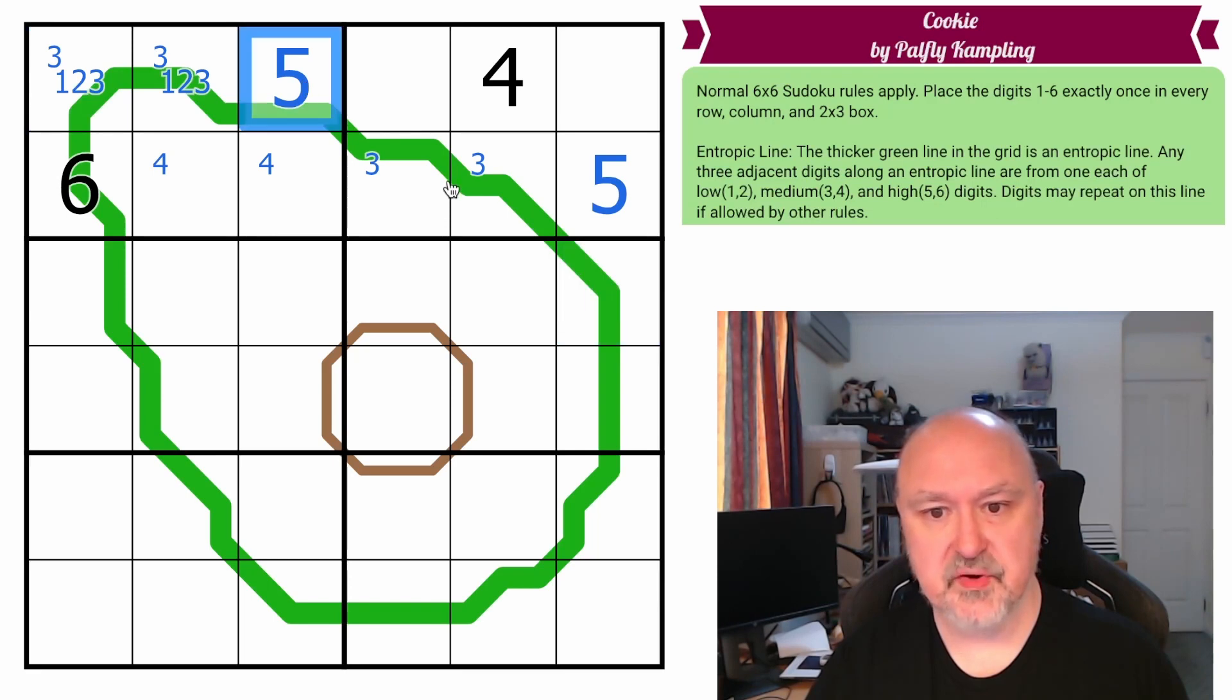Now, this has to be a high digit, because it's 3 away from this high digit, so this becomes the 6, and then 3 away, this also has to be a high digit. And I can go along to every third cell, and you will see that every third cell has to be a 5 or a 6.